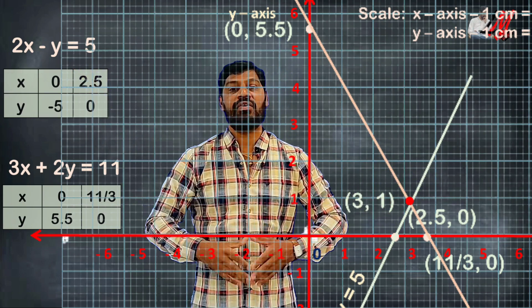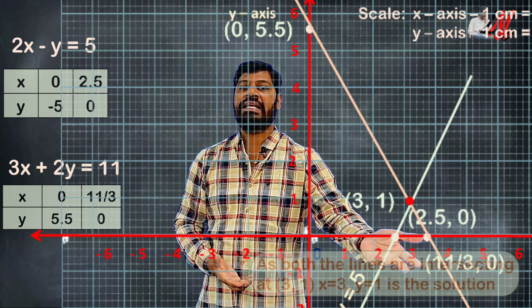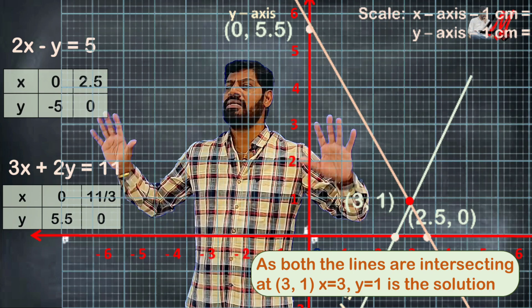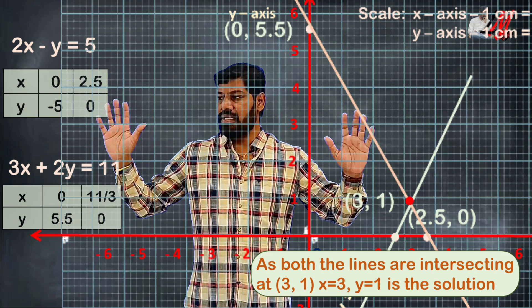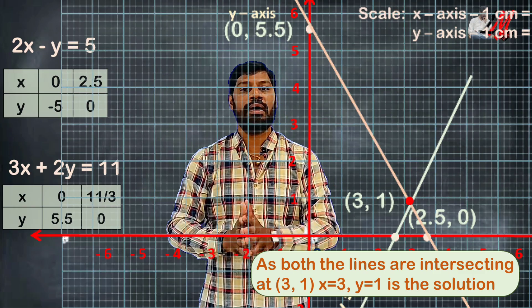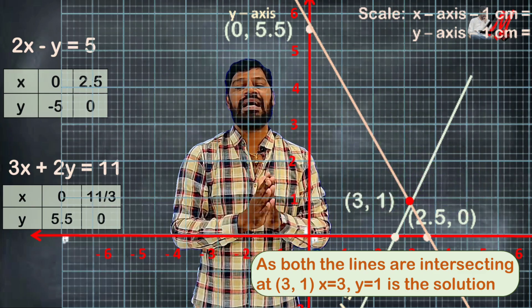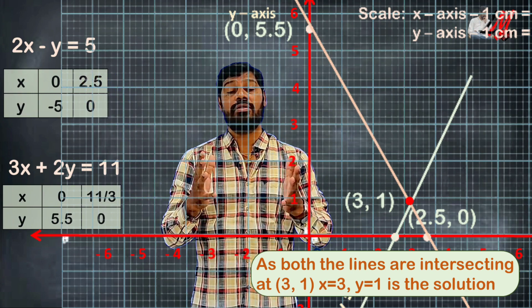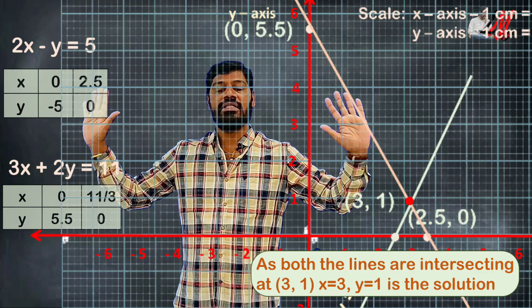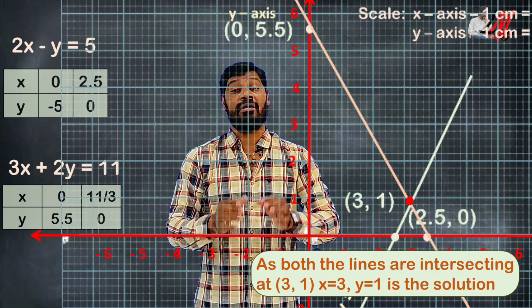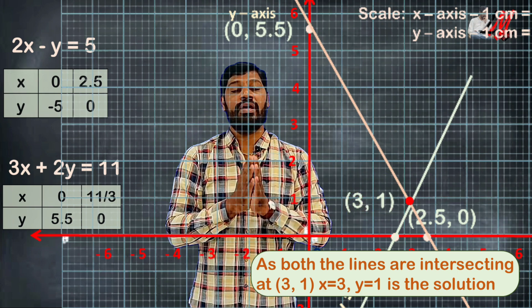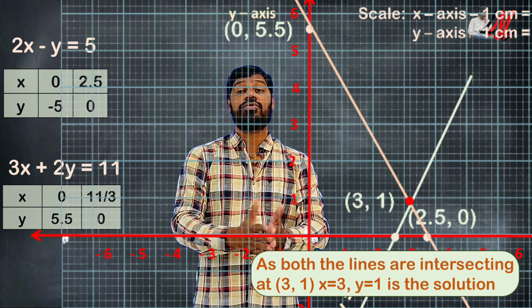Where the two lines intersect, there is one and only one unique solution for the given system of equations. The intersection point is (3, 1), meaning x equals 3 and y equals 1. So the given system has the unique solution x equals 3, y equals 1. If two lines intersect, there is a unique solution; if they do not intersect, there is no solution or many solutions.